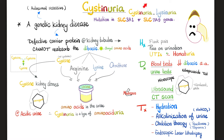How do we diagnose this patient? History, physical exam, genetic tests, and looking in the blood for low levels of these amino acids. Look in the urine for high levels of these amino acids and for cystin stones or crystals, which are hexagonal, translucent, and white. You can also utilize the nitroprusside test. Stones can be seen with the naked eye, but crystals are microscopic. You can also do an ultrasound and CT scan to visualize the stones.